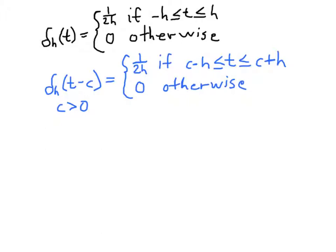which is the interval we're interested in when we're doing a Laplace transform. So let's take a look. We have the integral from zero to infinity of delta sub h of t minus c dt. What we're going to assume is that c is large enough and h is small enough, so that this quantity c minus h is greater than or equal to zero.